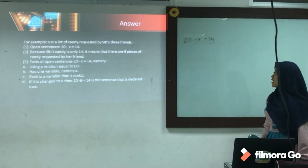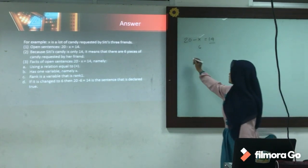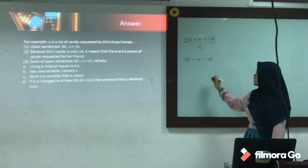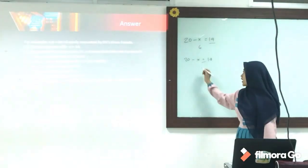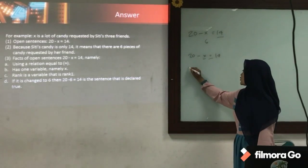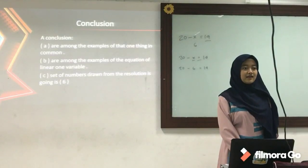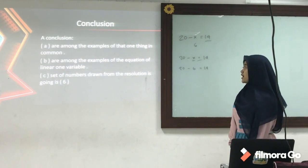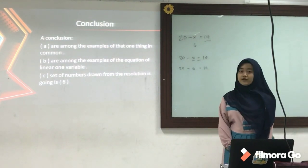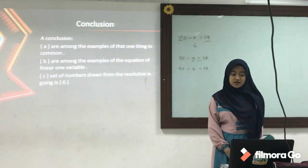It means that six pieces of candy were requested by her friends. The open sentence 20 minus X equals 14 uses the relation 'equals' and has one variable, namely X, which is of rank one. If X is changed to 6, then 20 minus 6 equals 14. Conclusion: A. This is an example of an open sentence. B. This is an example of a linear equation of one variable. C. The solution set is 6.